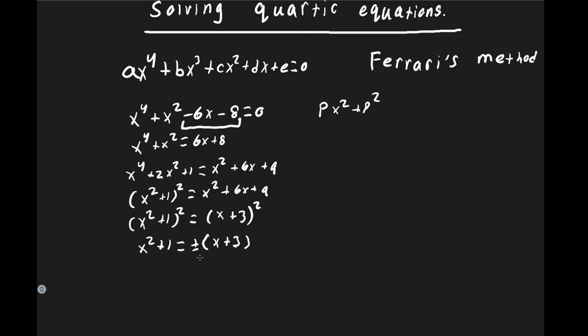Distributing the ± gives x² + 1 = ±x ± 3. Since the sign is positive, we take plus-plus and minus-minus cases. We get two equations: x² + 1 = x + 3, and x² + 1 = −x − 3. Be careful with sign choices, as wrong combinations give false solutions when plugged back into the original quartic.